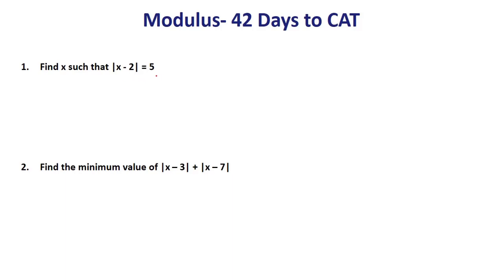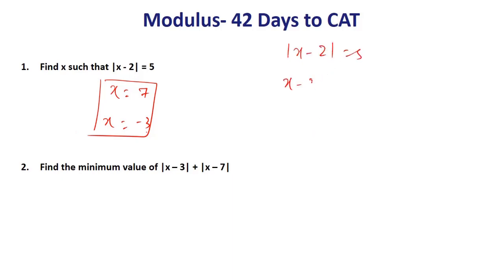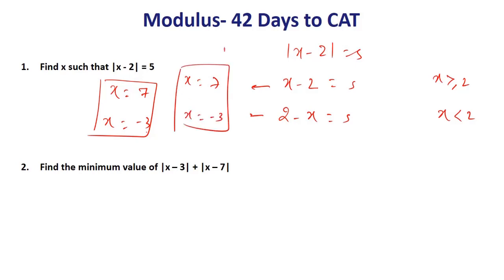Let's see another example: |x − 2| = 5. Distance of x from 2 is 5, so x can be 7 or −3. We can also solve this algebraically: write x − 2 = 5 when x ≥ 2, giving x = 7; and write 2 − x = 5 when x < 2, giving x = −3. Both methods give the same answer.